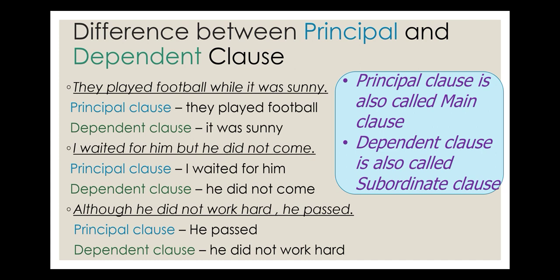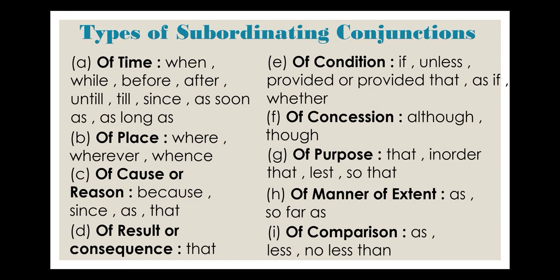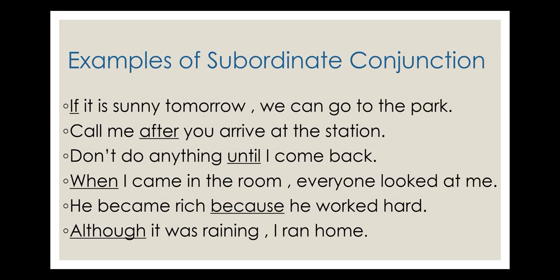Now let's look at the types of subordinating conjunctions. They can be used for time, place, result, concession, condition, purpose, or comparison. You have to learn which conjunction is used for which purpose. For example, conjunctions used for time include 'when', 'after', 'since', and so on.